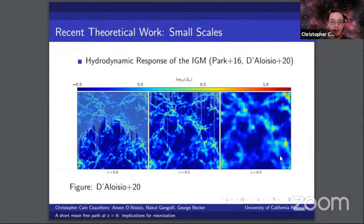Work has also been done to understand the impact of the ionized IGM on the mean free path. Recently, Park et al. 2016 and D'Aloisio et al. 2020 ran very high-resolution simulations of the response of the ionized IGM to reionization, and they found a rather complicated picture.